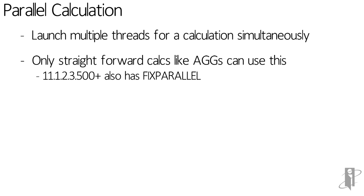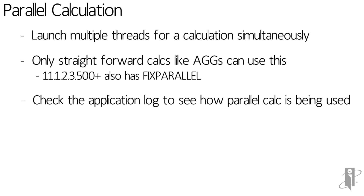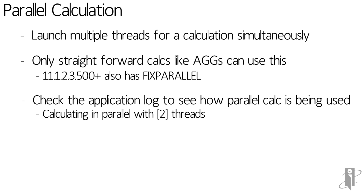Even if you have something really complicated like an export or complicated formula, you can wrap a fixed parallel command and you can tell S space that these various threads can run simultaneously — they're not going to actually step on each other. If you want to see if your parallel calculation is actually happening, you can go to the S space application log for the particular application that you're running. There'll be a line in there that looks something like 'calculating in parallel width' with square brackets showing how many threads are actually launching.